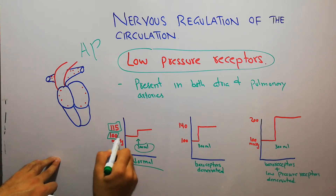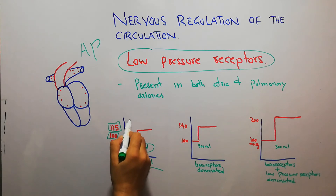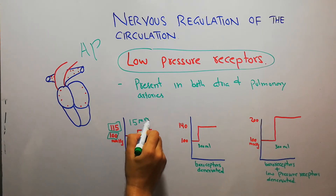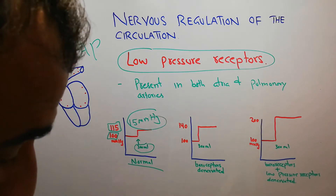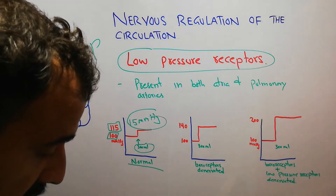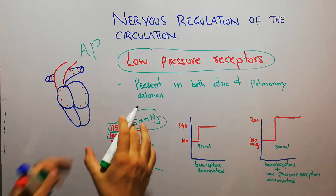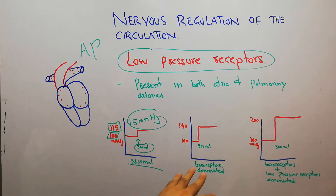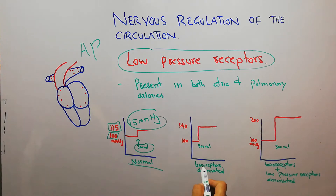The arterial pressure of this dog will just increase by 15 mmHg — from a normal of 100 mmHg to 115 mmHg — just an increase of 15 mmHg with an infusion of only 300 ml.